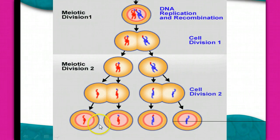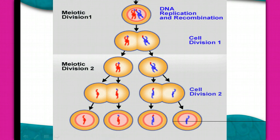Look at the end result. Does each of those copies of DNA look similar? Look at one compared to another — do they look the same? Would you consider all four of those products, those cells being made, to be genetically different? Hopefully, you said yes.